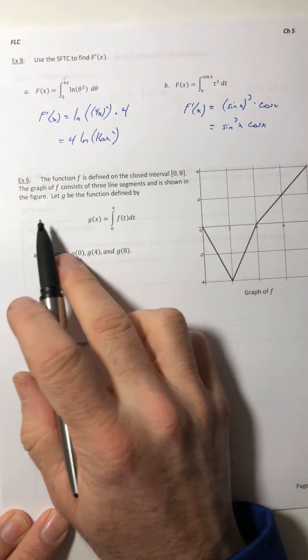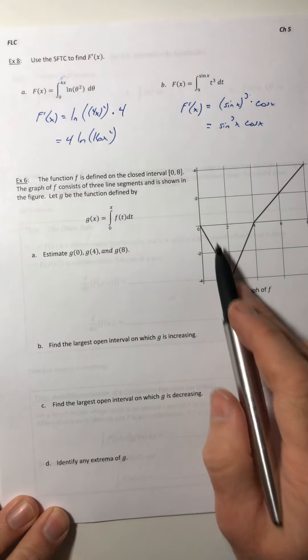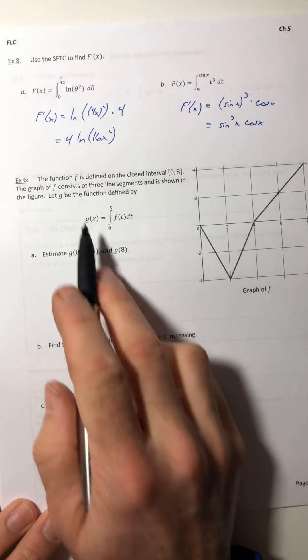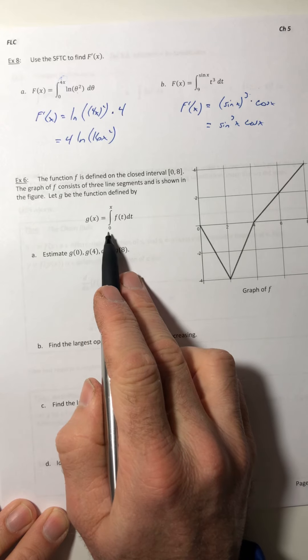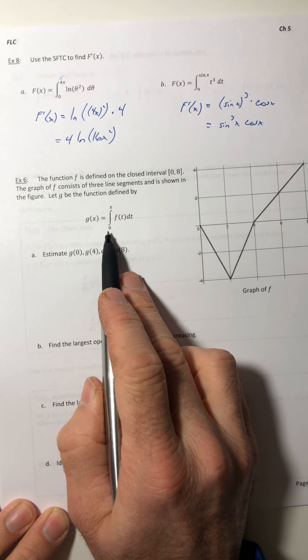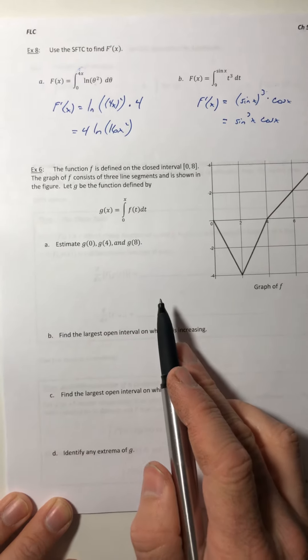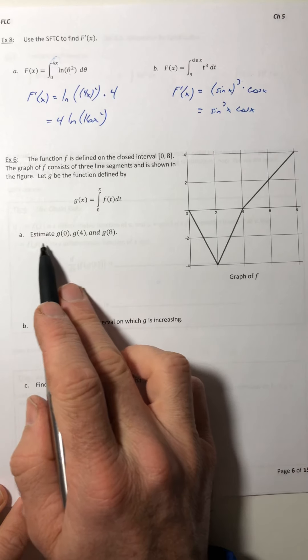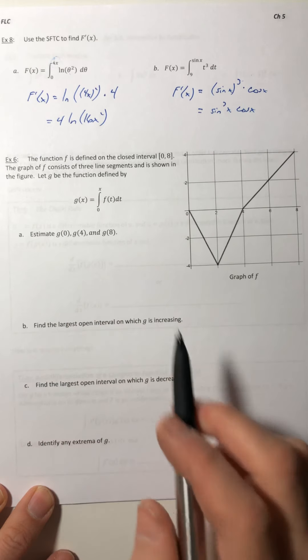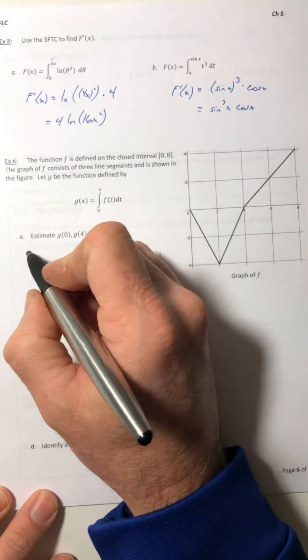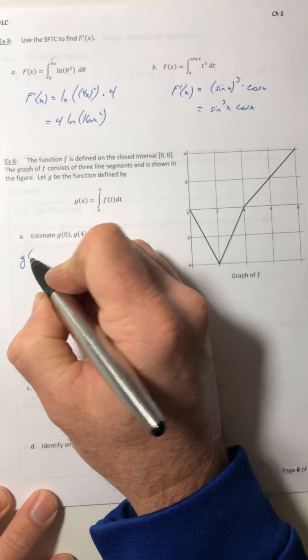Alright, let's look at this last example. So the graph consists of three line segments. Let g be the function defined by the integral from 0 to x of f(t) dt. So estimate g(0), g(4), and g(8).